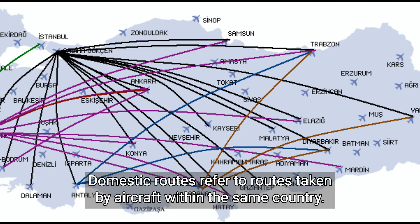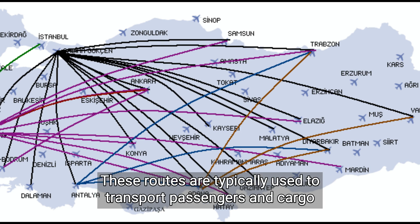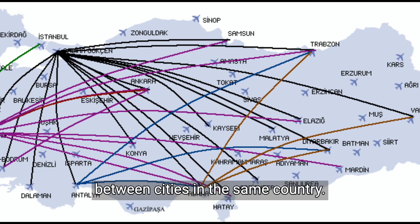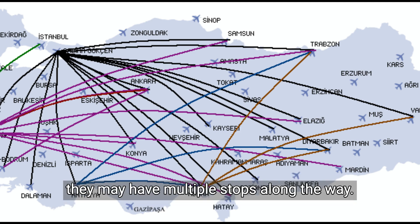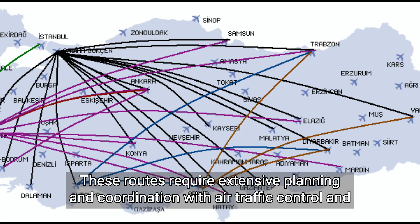Domestic routes refer to routes taken by aircraft within the same country. These routes are typically used to transport passengers and cargo between cities. Domestic routes can be direct, with the aircraft flying non-stop from one city to another, or they may have multiple stops along the way.